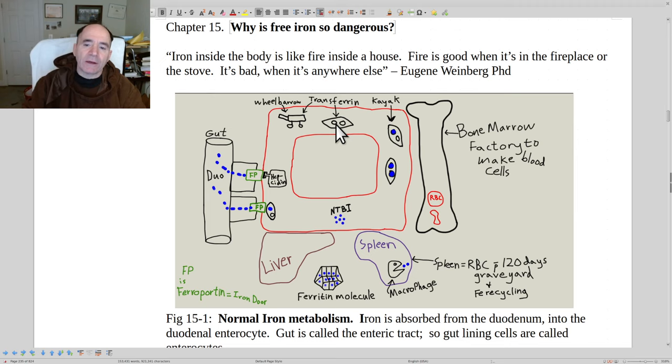A lot of the iron will go to the bone marrow so it can be incorporated, for example, into hemoglobin for carrying oxygen in the red blood cells. That's a large amount of the iron that we get.